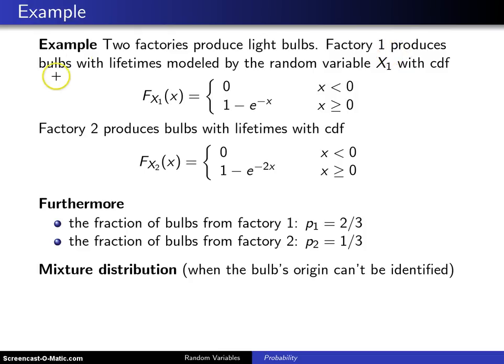Factory one produces light bulbs that have lifetimes modeled by the random variable X1, and this random variable X1 has a cumulative distribution function capital F_X1 of x is zero because you can't have a negative lifetime, and it is one minus e to the minus x for x greater than or equal to zero.